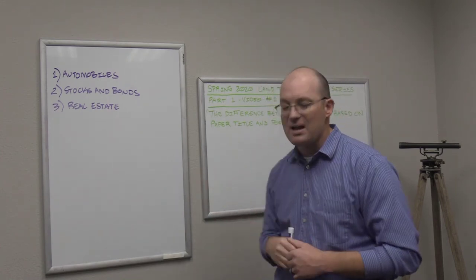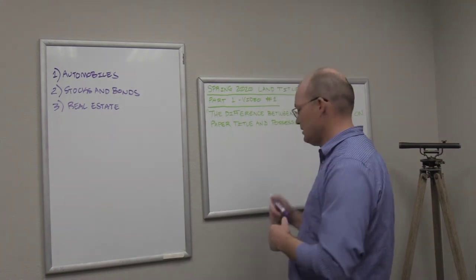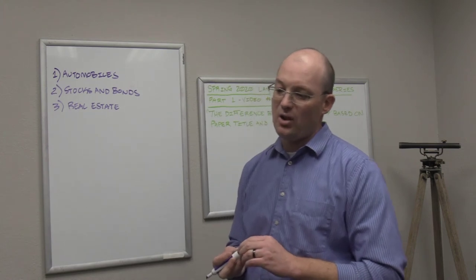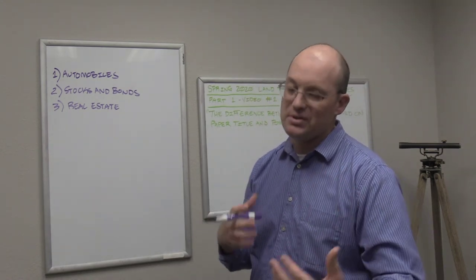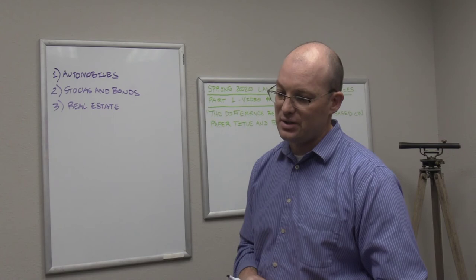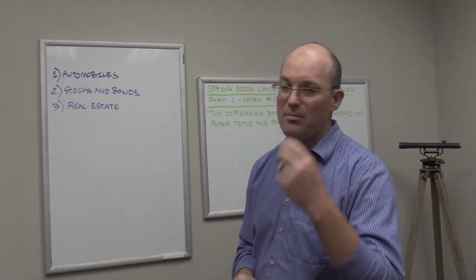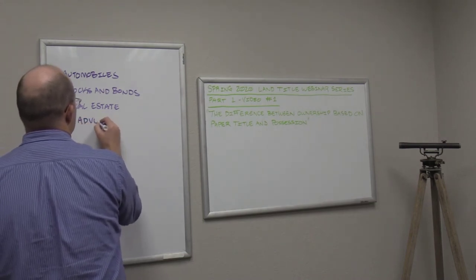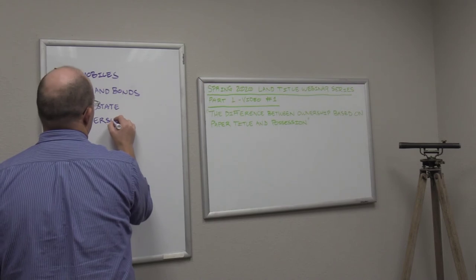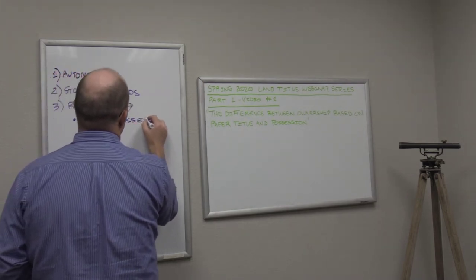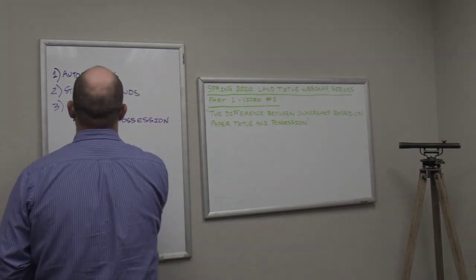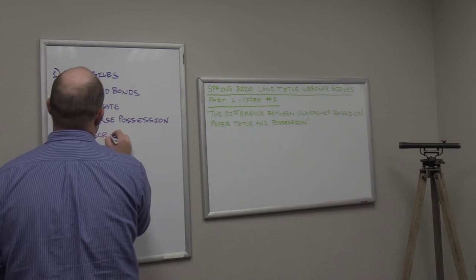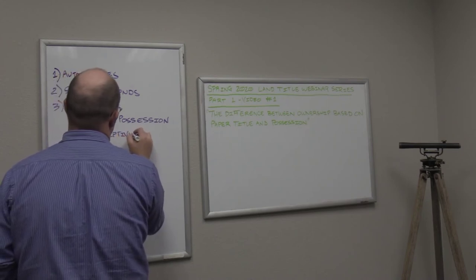I'll do another video that talks about the economic consequences of these two systems. But the system we have in the United States is a blend. For land, for real estate, it's primarily a paper title system. But there's an element of ownership through possession in our legal system for real property, and it's manifest in two primary ways. I'm going to write down the two primary ways. One is what's called adverse possession - that's a legal concept or doctrine. And the other one is called prescriptive rights or prescriptive easements. That's another legal concept or doctrine.